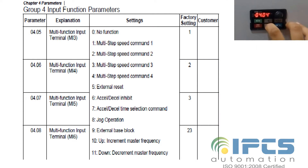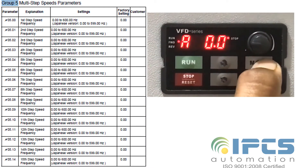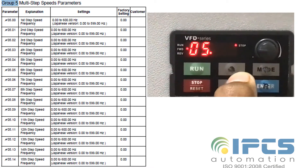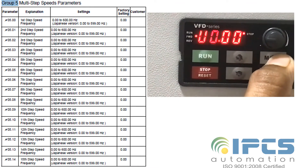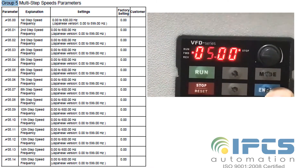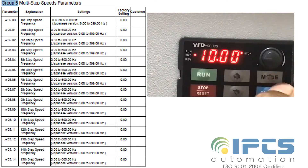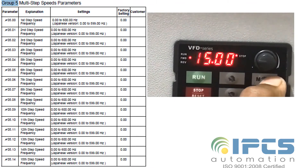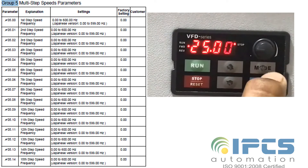In Group 4, the input function parameter can be changed to multi-step speed command. To set all the desired step frequencies, change all the parameters of Group 5. Parameters should be carefully set according to the requirement.